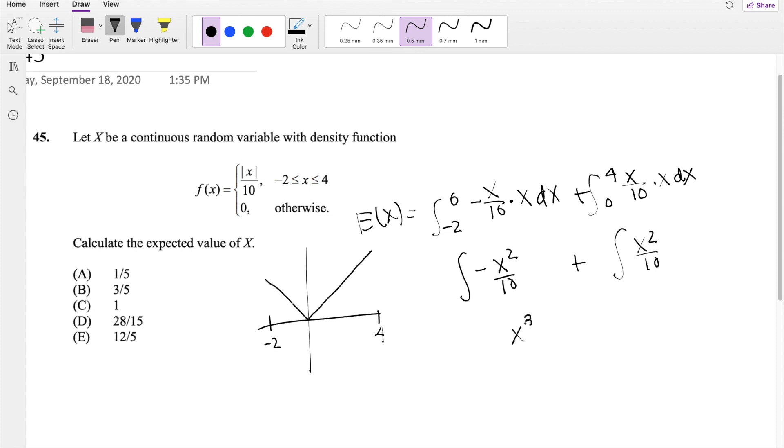When you take the antiderivative, this becomes x cubed over 30, negative, integrating from 0 to negative 2. On this side, you have x cubed over 30, positive, integrating from 0 to 4.